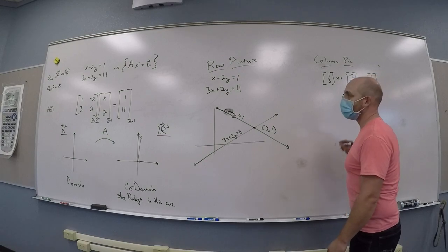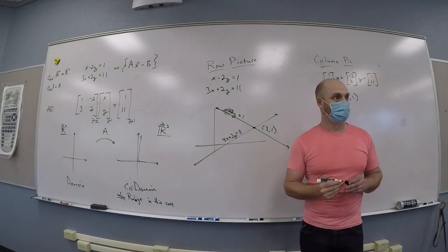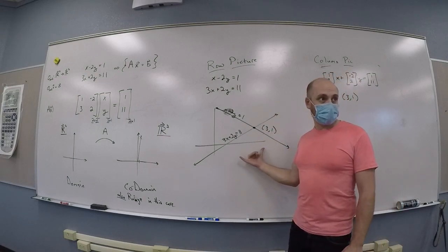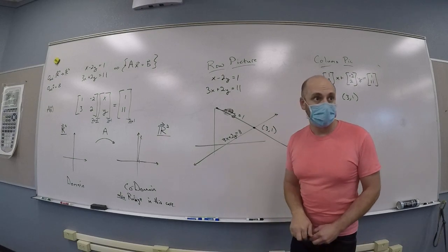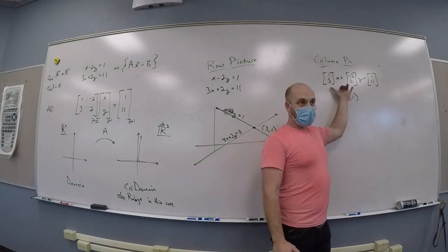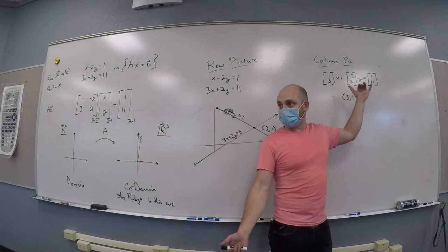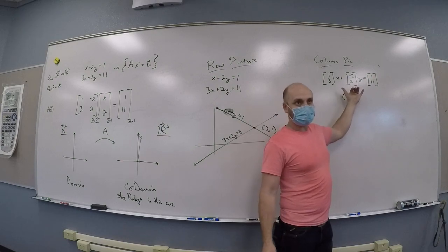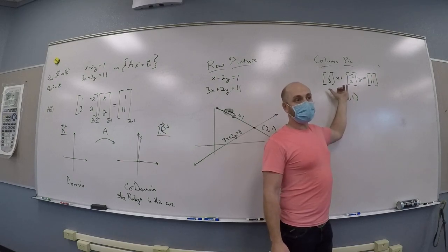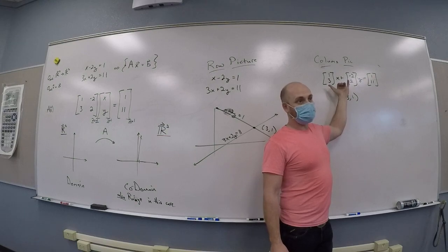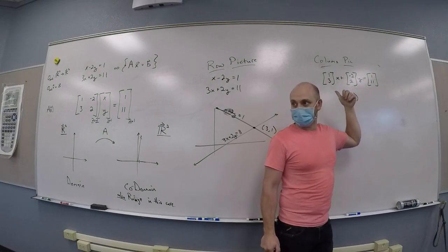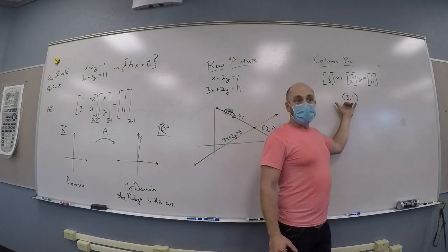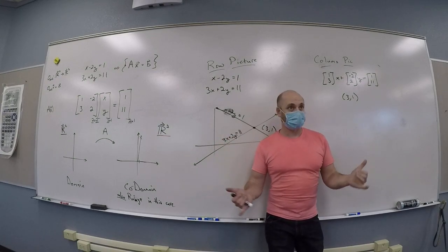We're going to have a bunch of techniques to play with this. You've got this one: graph it, check where the intersection is. That's a technique that's perfectly valid. You've got this one: write down the column picture, maybe guess and check an answer or reason your way to an answer. On this one, you're kind of left to guess and check. The column picture is really easy to solve if you happen to have a zero in one or the other coordinate. You can see that, okay?